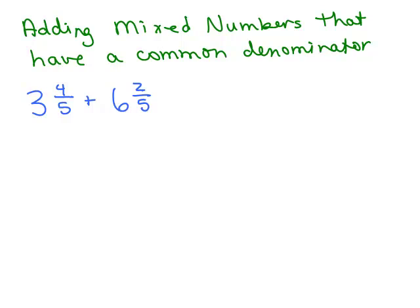3 and 4 fifths plus 6 and 2 fifths. Often people like to write this going up and down, so it doesn't matter which you put first. Let's say I put 6 and 2 fifths plus 3 and 4 fifths — either of these are an okay way to write the problem.